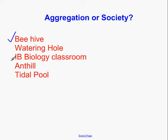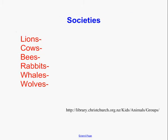How about an anthill? Yeah, same thing — ants are organized just like bees are. All insects are that way pretty much. There are queen ants, workers, drones, and so forth. How about a tide pool? No, it's just whoever washed up in that area — that would be an aggregation.